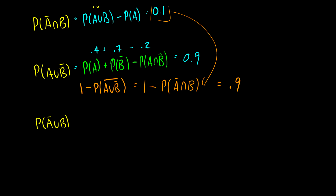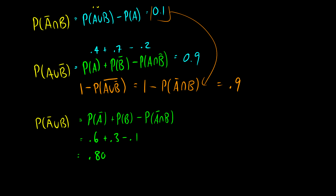Finally, P(A-bar union B) equals P(A-bar) plus P(B) minus P(A-bar intersection B), which is 0.6 plus 0.3 minus 0.1, giving us 0.8. You can apply the same set theory laws as before, but doing it this direct way works just as well.